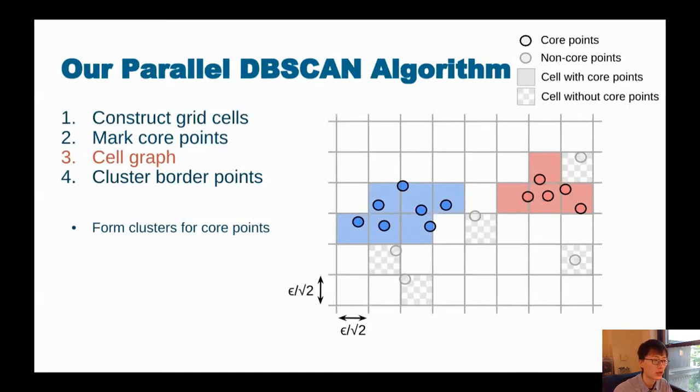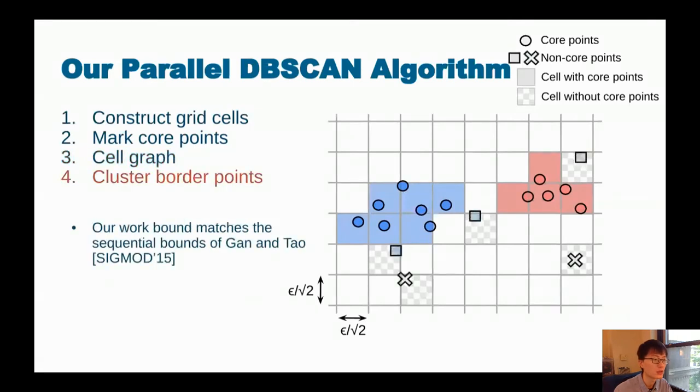For the remaining points, step four, we use a similar technique as we did for step two. And note that the work bound of our parallel algorithm matches the best sequential algorithm, which is by Gan and Tao in 2015.